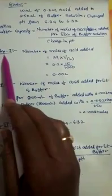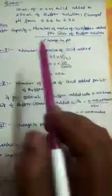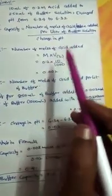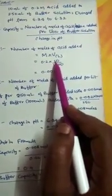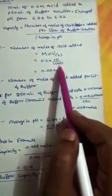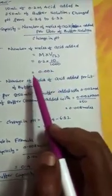Now for simplification I am explaining the total question in 3 steps. First let us find out in step 1, number of moles of acid added which formula is molarity into volume. If you want to get in moles we should keep in mind that volume should be in liter. So molarity is given 0.2 and volume is given 10 ml. So for converting ml into liter divided by 1000. You will get 0.002 moles of acid added.